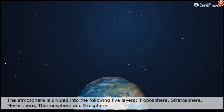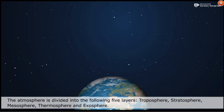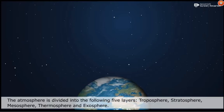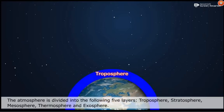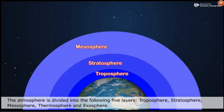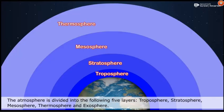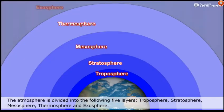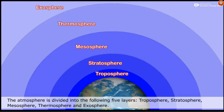The atmosphere is divided into the following five layers: Troposphere, Stratosphere, Mesosphere, Thermosphere, and Exosphere.